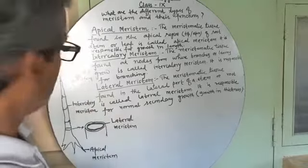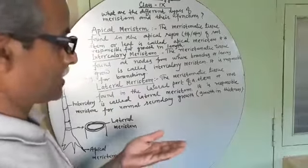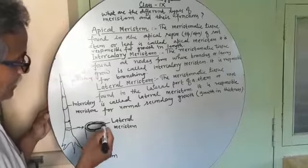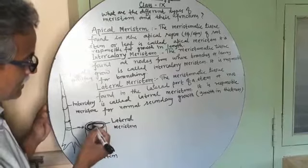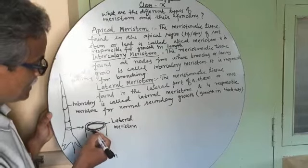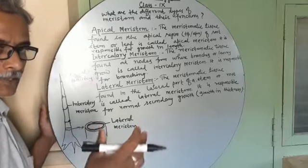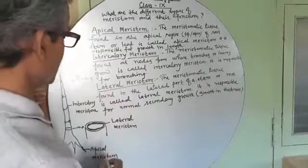The third type of meristem is called lateral meristem. When we cut a cross section of a stem we find such a round structure, and in this there is a ring of cells, that special tissue that is called lateral meristem.